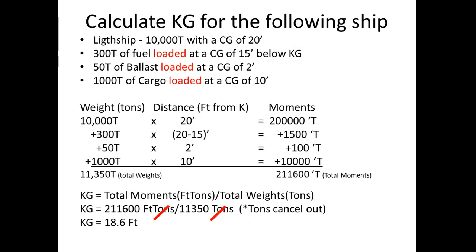Here is an example of a problem solved using the theory of moments. You have a light ship — let's say it's 10,000 tons. The center of gravity of that light ship is 20 feet above the keel. So 10,000 tons times 20 feet gives us a moment of 200,000 foot-tons. That's the light ship.